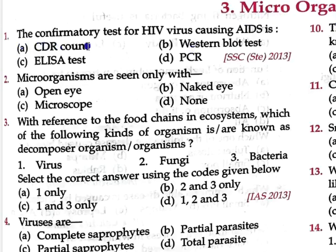Question No. 1: The confirmatory test for HIV virus causing AIDS is — Option A: CDR count. Option B: Western blot test. Option C: ELISA test. Option D: PCR test.